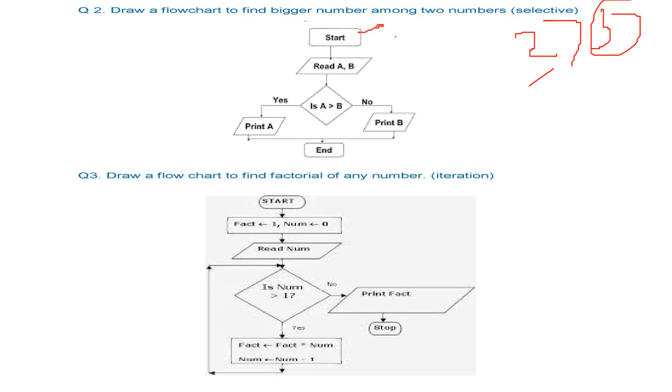So we start, we read A and B, we check whether A is greater than B. If it is yes, we print A, if it is no, we print B and then we end.